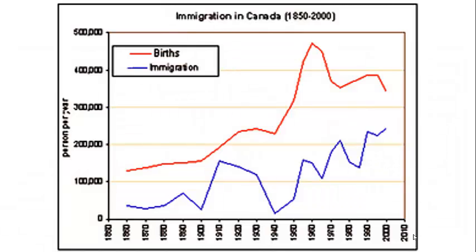Although immigration rates have changed over time, its importance to Canadian population growth is increasing. This graph shows birth rates versus immigration rates over Canada's history, and we can see the two are converging into the 21st century. Birth rates are on the decline while immigration rates are increasing. If this pattern continues, one day we might see immigration rates overtake birth rates. Without a positive net migration, Canada's growth rate would be very slow or even stagnant, and there are certain issues that would come along with that.